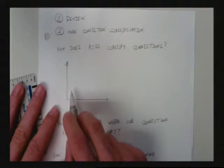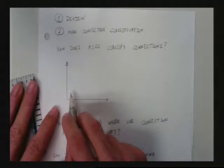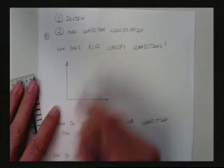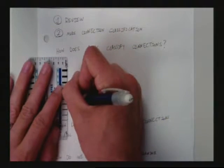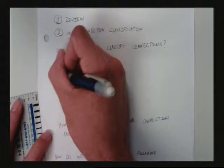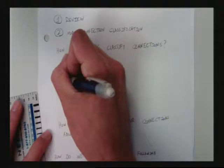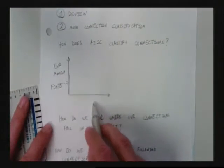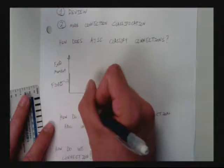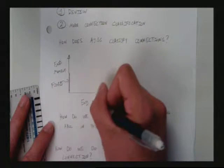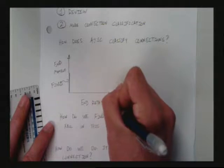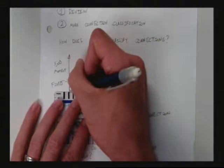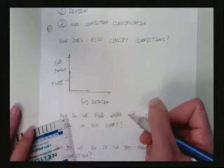Who remembers what the y-axis is on the graph? End moment is what's on the y-axis — and fixed is right up there. The label for the x-axis is end rotation. Fixed is up at the top, and pins — some kind of pin connection — are down there. And you realize those go forever in those two directions.